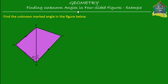Welcome to homecampus.com.sg. Let's solve this exercise which says: find the unknown marked angle in the figure below. The figure here is ABCD, and from this figure I can say that this is a trapezium because the side AB is parallel to the side DC. So in a trapezium there is one pair of sides that is parallel to each other.